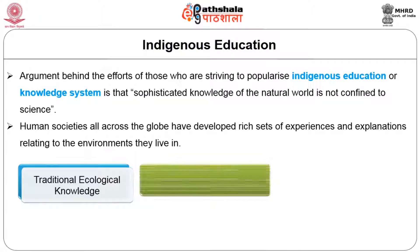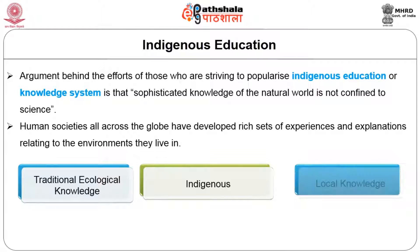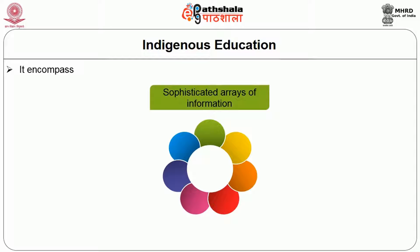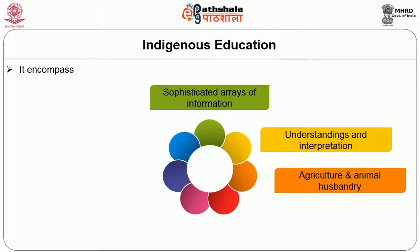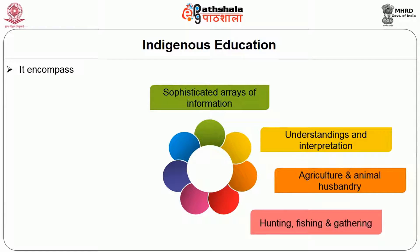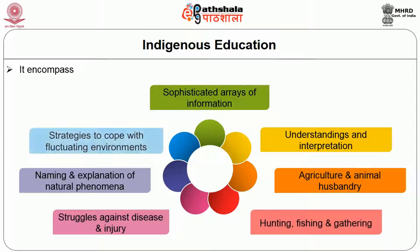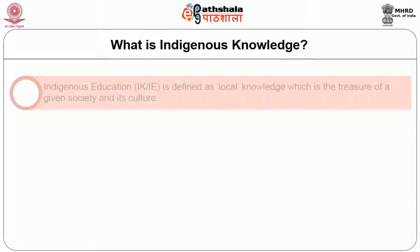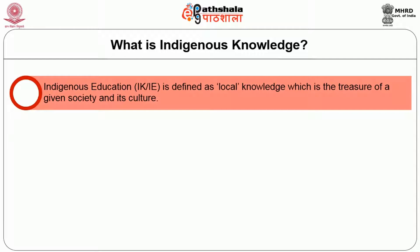These other knowledge systems are today often referred to as traditional ecological knowledge, or indigenous or local knowledge. They encompass sophisticated arrays of information, understandings, and interpretations that guide human societies around the globe in their innumerable interactions with the natural milieu — in agriculture and animal husbandry, hunting, fishing and gathering, struggles against disease and injury, naming and explanation of natural phenomena, and strategies to cope with fluctuating environments.